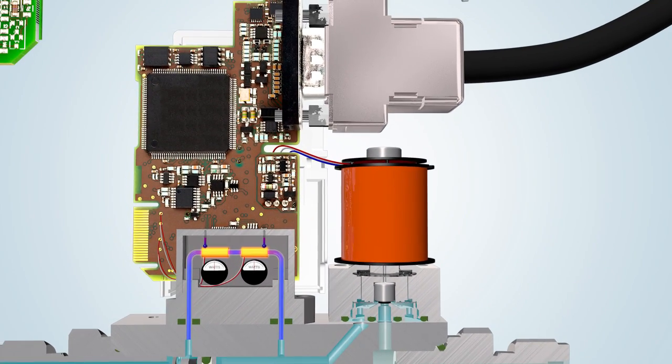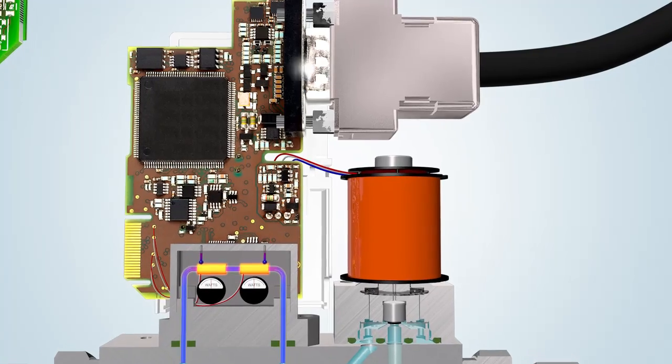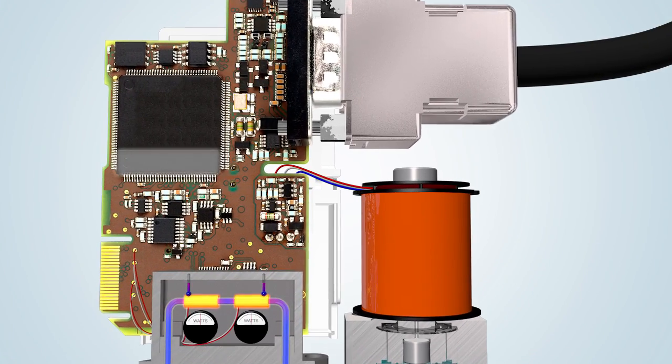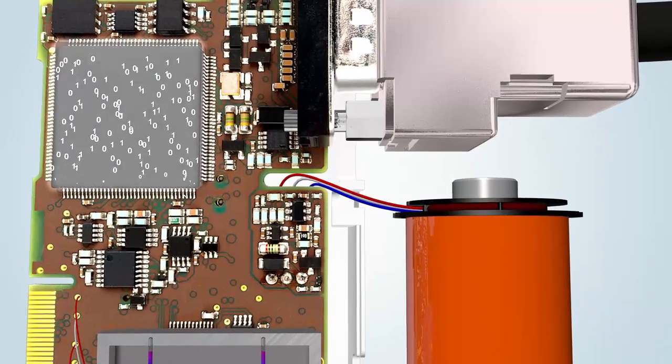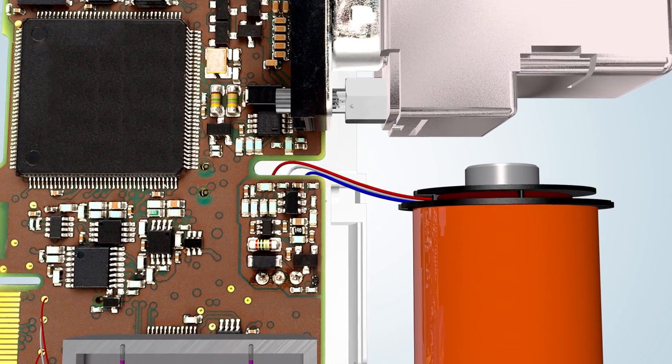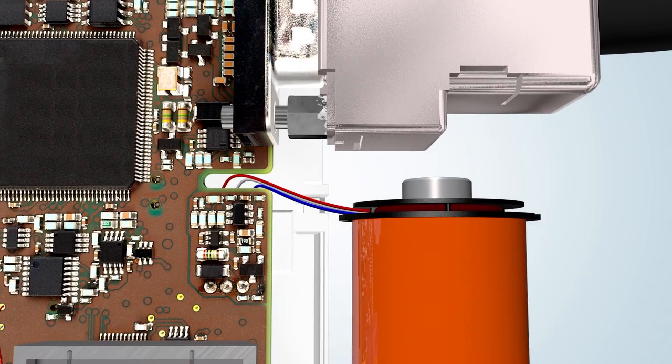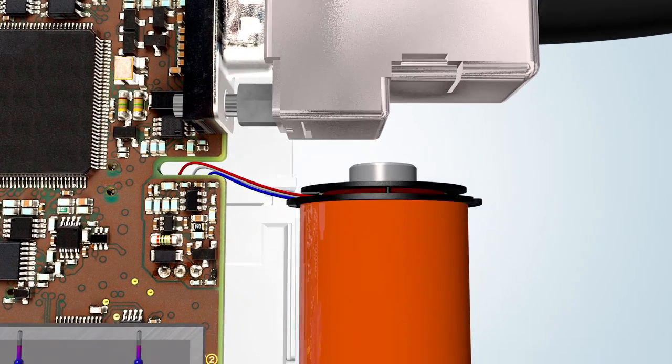The instrument receives a set point via the PC, PLC or analog port. This required value is compared with the measured value. If the required value is higher than the measured value, the PID controller will actuate the control valve.